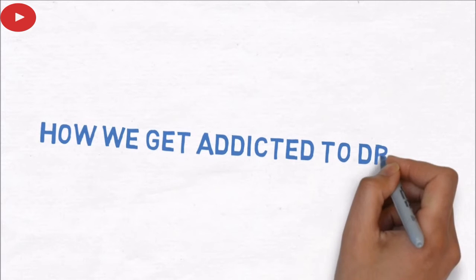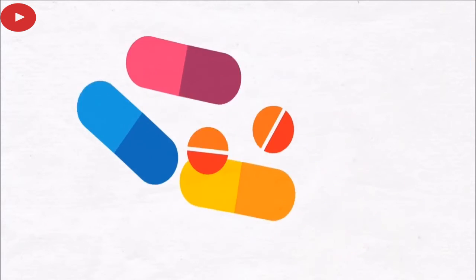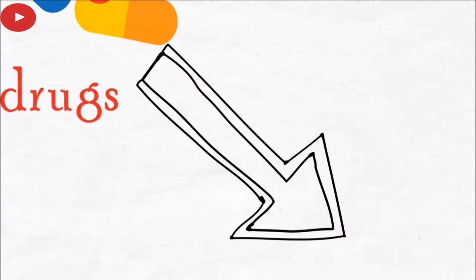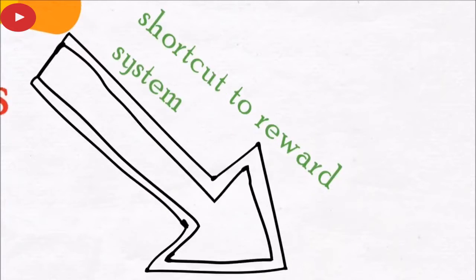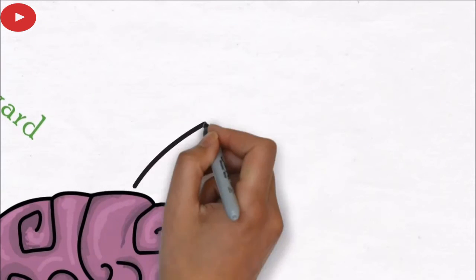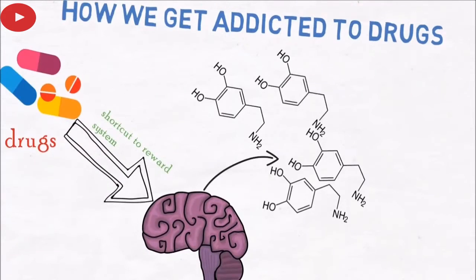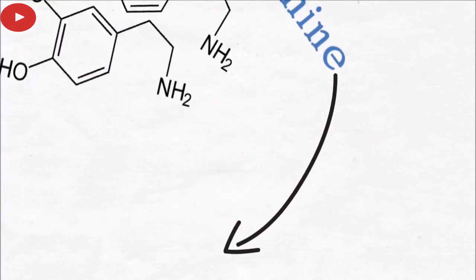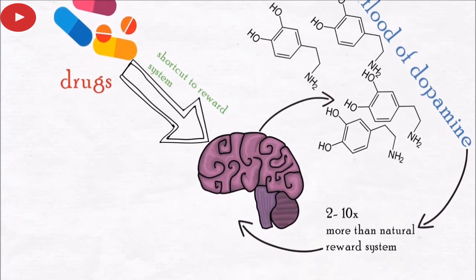How do we get addicted to drugs? Addictive drugs provide a shortcut to the brain's reward system. They flood the nucleus accumbens with too much dopamine — 2 to 10 times more than the natural reward system does — and this overloads the brain.